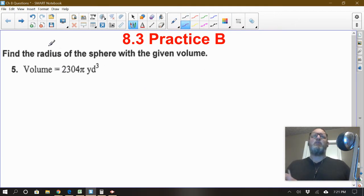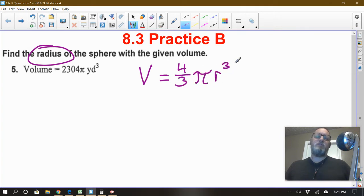Alrighty. So it says find the radius. We're actually looking for the radius of a sphere with a given volume. So there's our volume, 2,304π yards cubed. The formula for the volume of a sphere is V equals four thirds π r cubed, or to the third power.